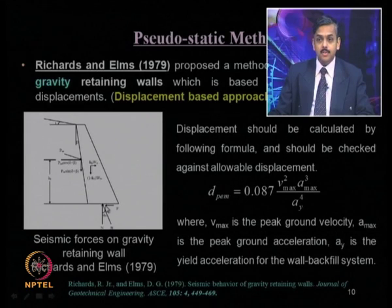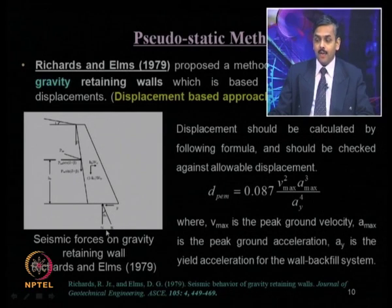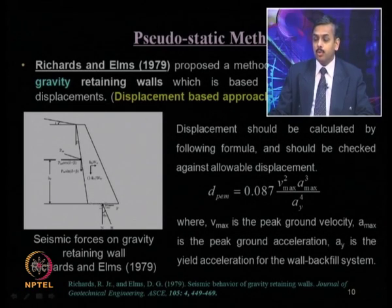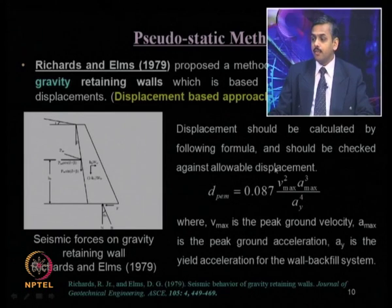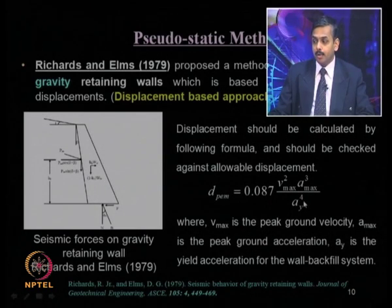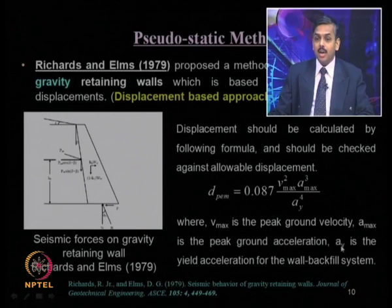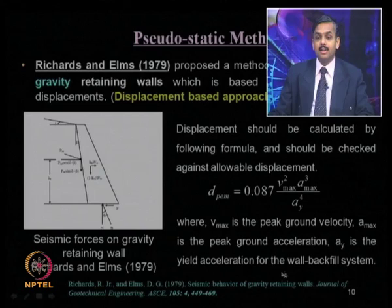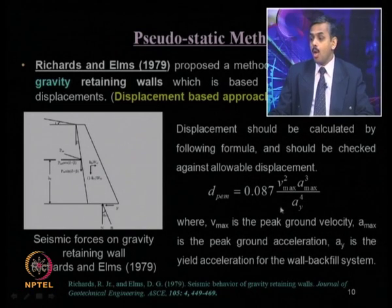The force of resistance and normal reaction are considered, with the resultant acting at angle phi_b, which is the friction angle between the base of the wall and foundation soil. The permissible displacement can be computed as 0.087·V_max²·a_max³ / a_y⁴, where V_max is peak ground velocity, a_max is peak ground acceleration, and a_y is the yield acceleration for the wall-backfill system.